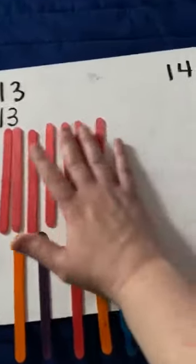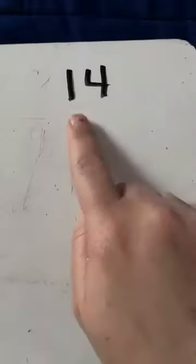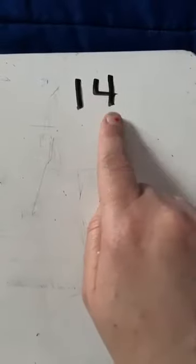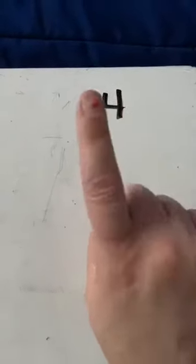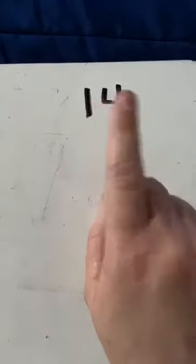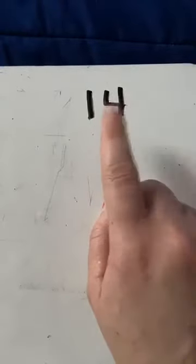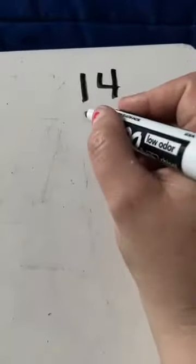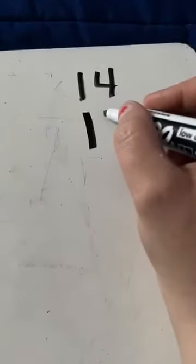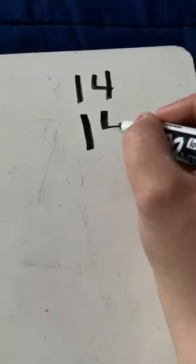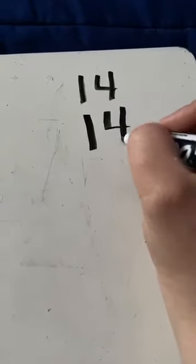Very good. Now we have another number that I want to talk about today. When we're counting go 13, 14. This is the number 14. The one and the four make the 14. So when I'm writing the number 14, I write a one first and then I make my four. I come down, over and back down. That's the number 14.